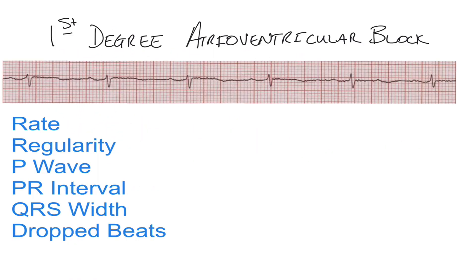Hey everyone, in this video we're going to look at first-degree AV blocks — AV standing for atrioventricular. The rate of a first-degree AV block is going to be determined by the underlying rhythm.